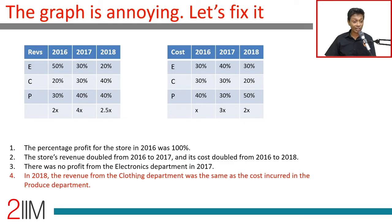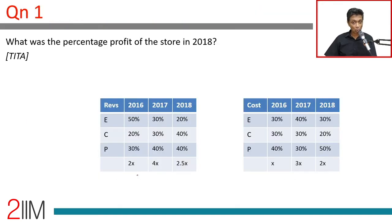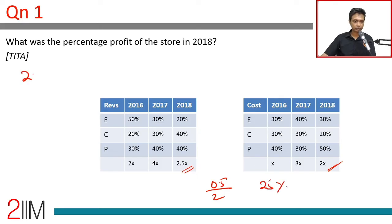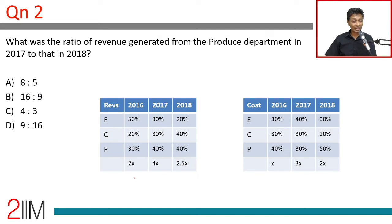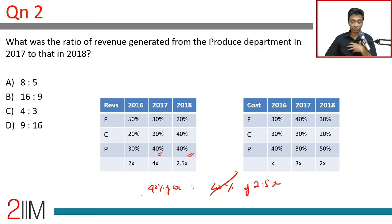Now the whole grid is complete and we can solve all questions. Percentage profit of the store in 2018: profit = 2.5x − 2x = 0.5x, cost = 2x, so percentage profit = 0.5x / 2x × 100 = 25%. Ratio of revenue from the produce department in 2017 to 2018: 40% of 4x to 40% of 2.5x = 4 : 2.5 = 8 : 5.